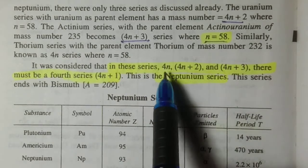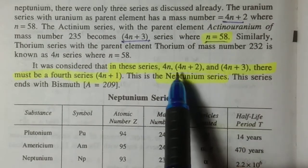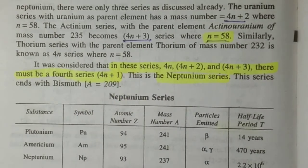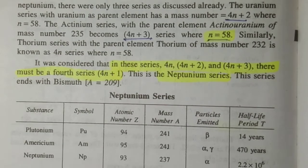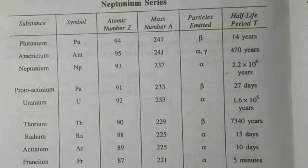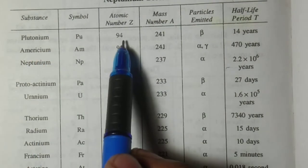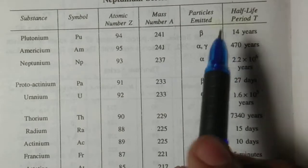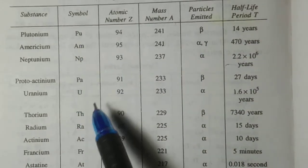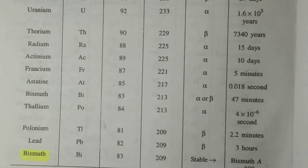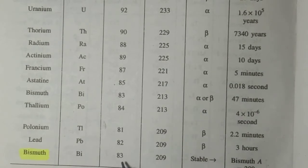The first three series discovered were 4n, 4n plus 2, and 4n plus 3. So it was thought there must be a fourth series of 4n plus 1, and this is the neptunian series. This series ends with bismuth A equal to 209. The parent element is plutonium with atomic number 94 and mass number 241, particle emitted is beta, and the half-life period is 14 years. The series ends with bismuth with mass number 209, which is stable bismuth.